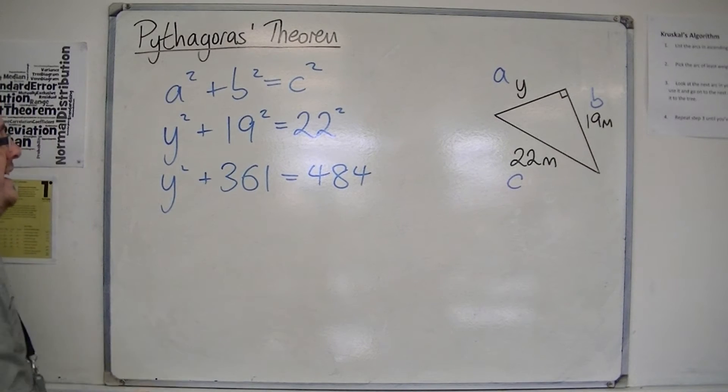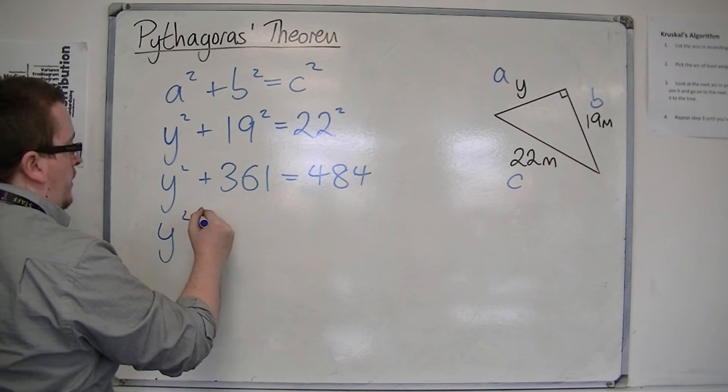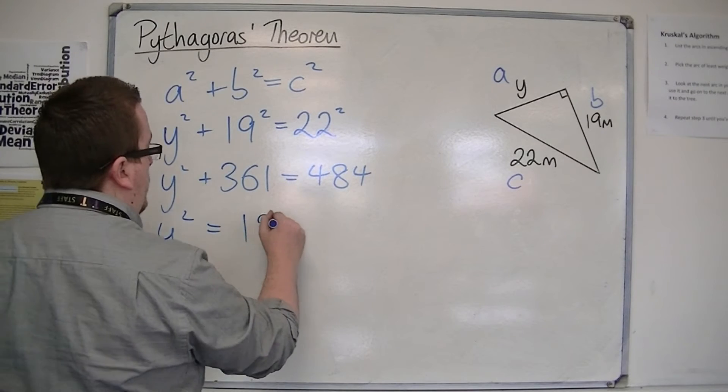So we need something plus 361 is 484, so if you subtract 361 from both sides, you get left with 123.